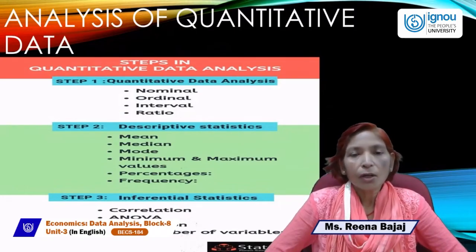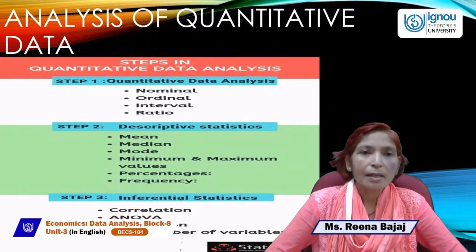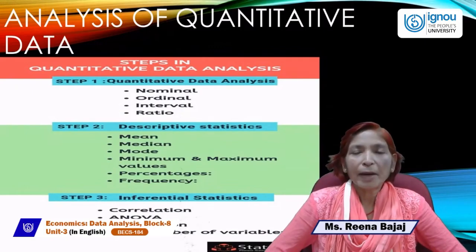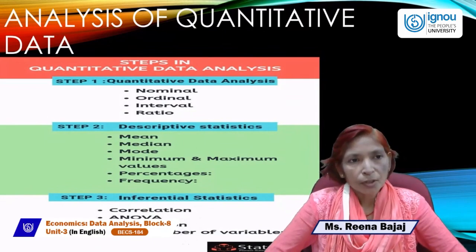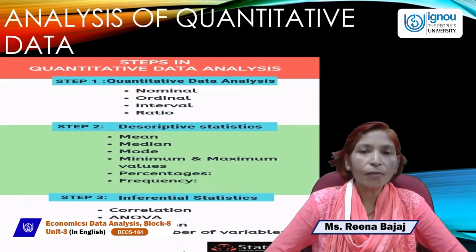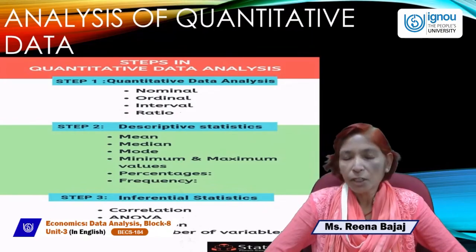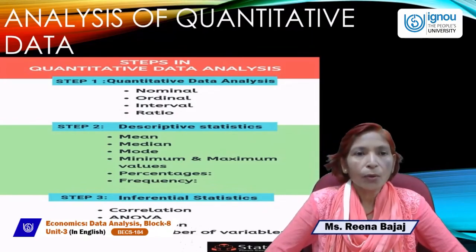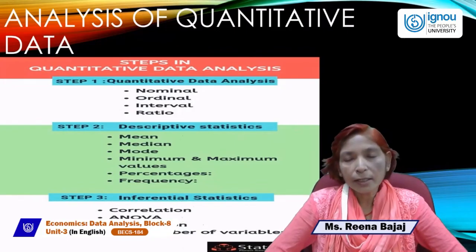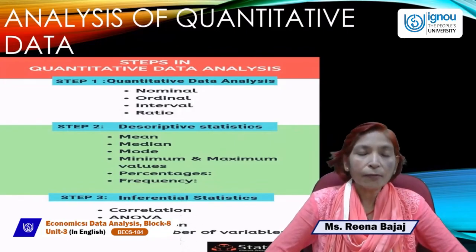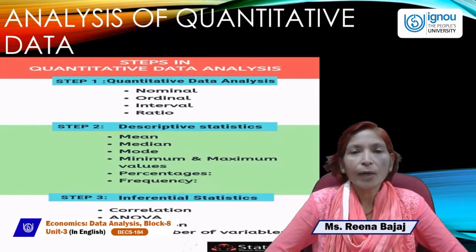Qualitative data includes things like honesty, beauty, IQ level, and patriotic feelings of a person — things that cannot be measured or quantified in accurate numbers. So some data are quantitative in nature, which can be quantified, and some data are qualitative, which cannot be accurately measured. Today we will discuss quantitative data and explain the difference between quantitative and qualitative data.